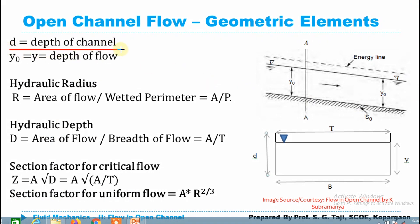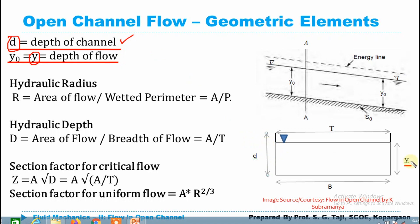Let's define terms: d is the depth of channel and y is the depth of flow. Sometimes it is also denoted as y₀; in case of uniform flow it is referred to as normal depth, which does not change over the length. d is the total depth of channel, and the channel need not be fully filled with flowing liquid — the depth of flow y may be less than the depth of channel d. Note that both y and d are sometimes used to represent depth of flow, so remember that both can represent depth of flow.